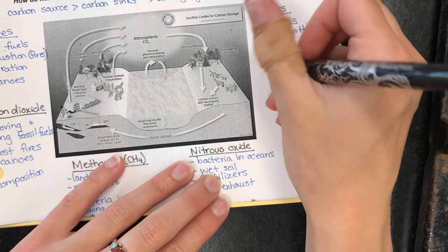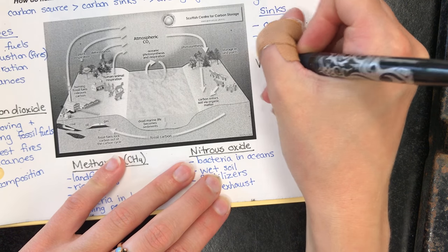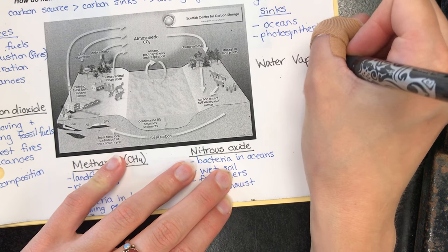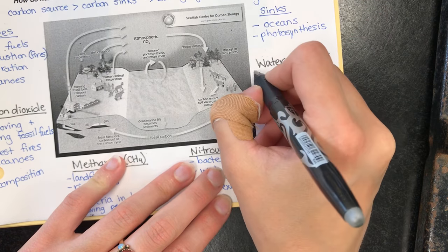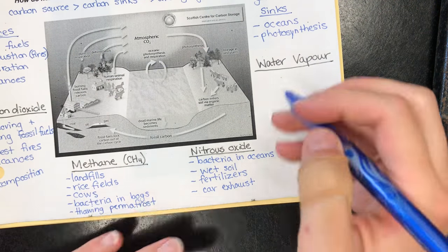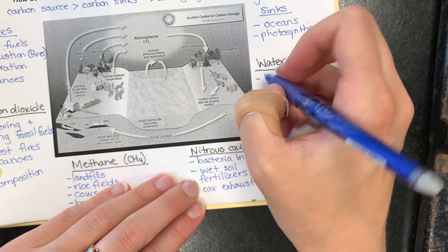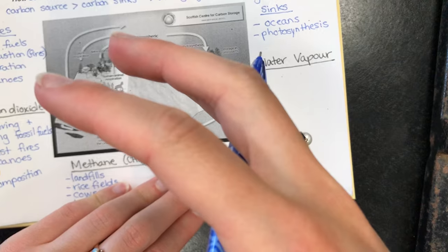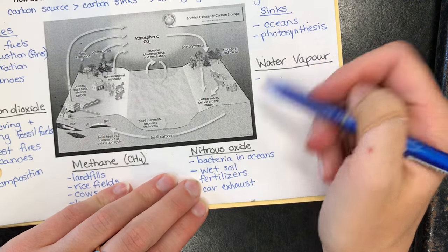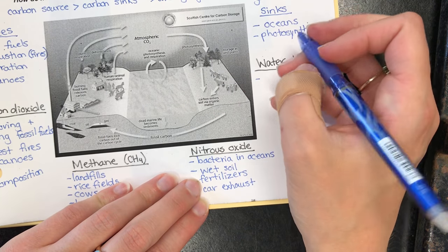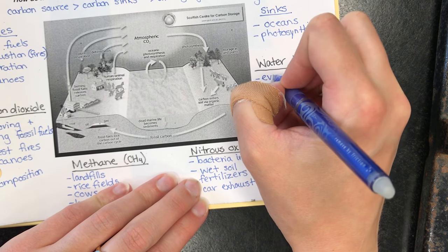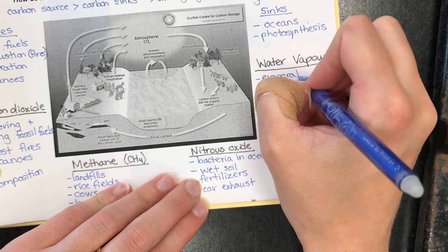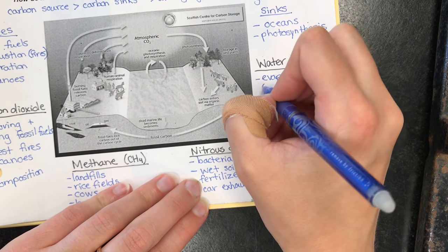The last main one we're going to talk about is water vapor. The biggest one would be evaporation through the water cycle. Water as it heats up from a pond or an ocean goes into the clouds and that kind of stuff. Evaporation when it goes from a liquid to a gas. Think of the water cycle.